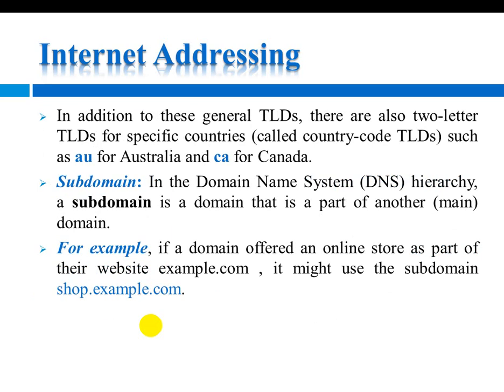In addition to these general top-level domains, there are also two-letter top-level domains for specific countries, called country codes, such as .au for Australia and .ca for Canada.